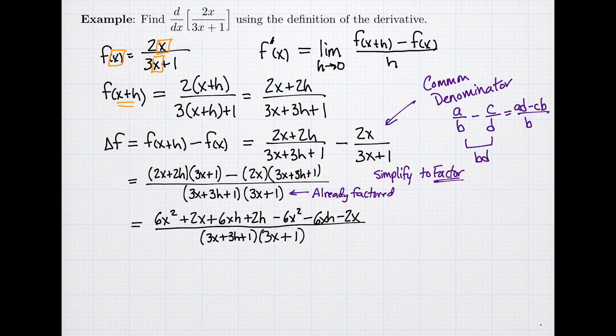I can simplify my numerator. 6x squared cancels, 6xh cancels, and 2x cancels. So what's left? I have my change in f. I'm left with 2h in the numerator, and then 3x plus 3h plus 1 times 3x plus 1 in my denominator. All right. So this is my delta f.